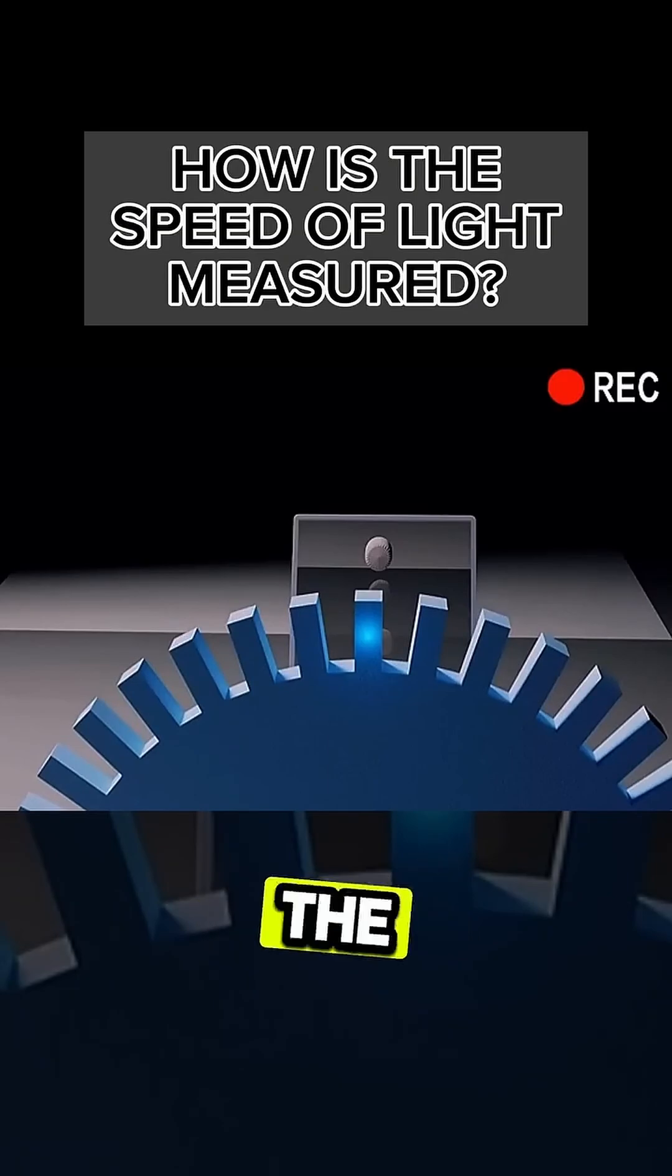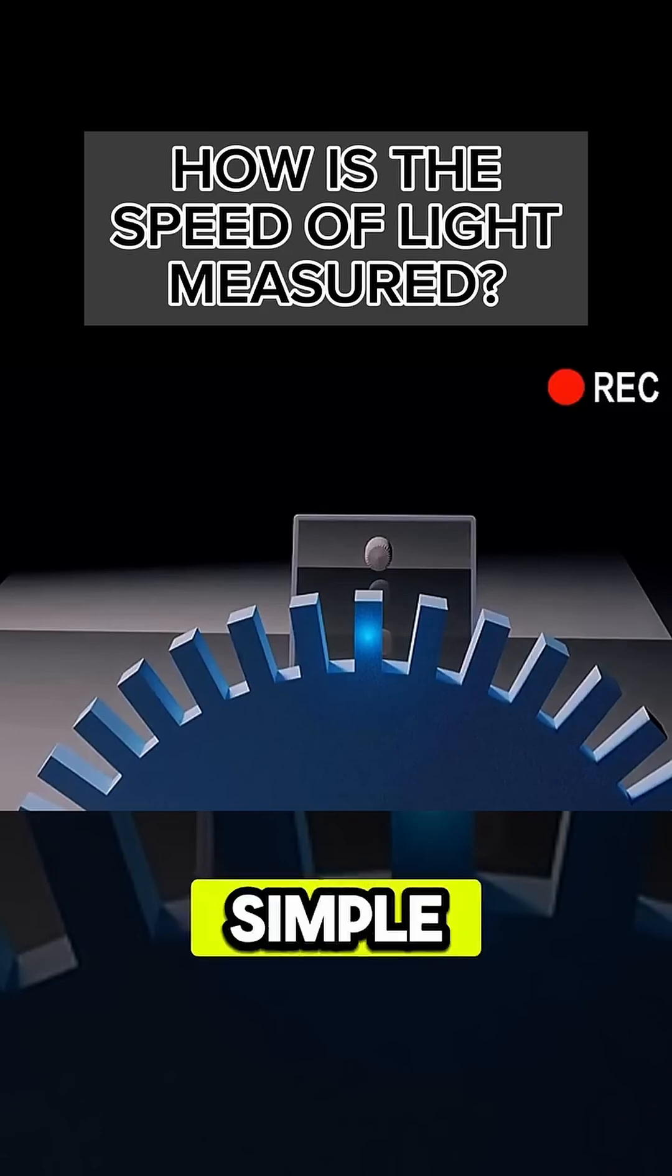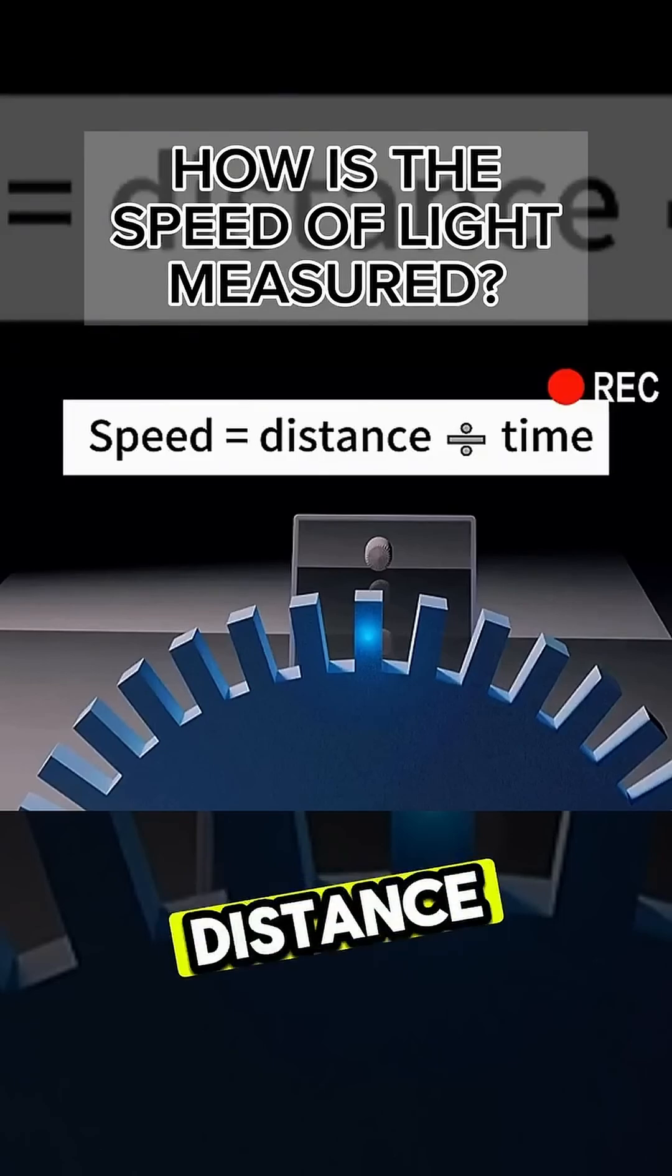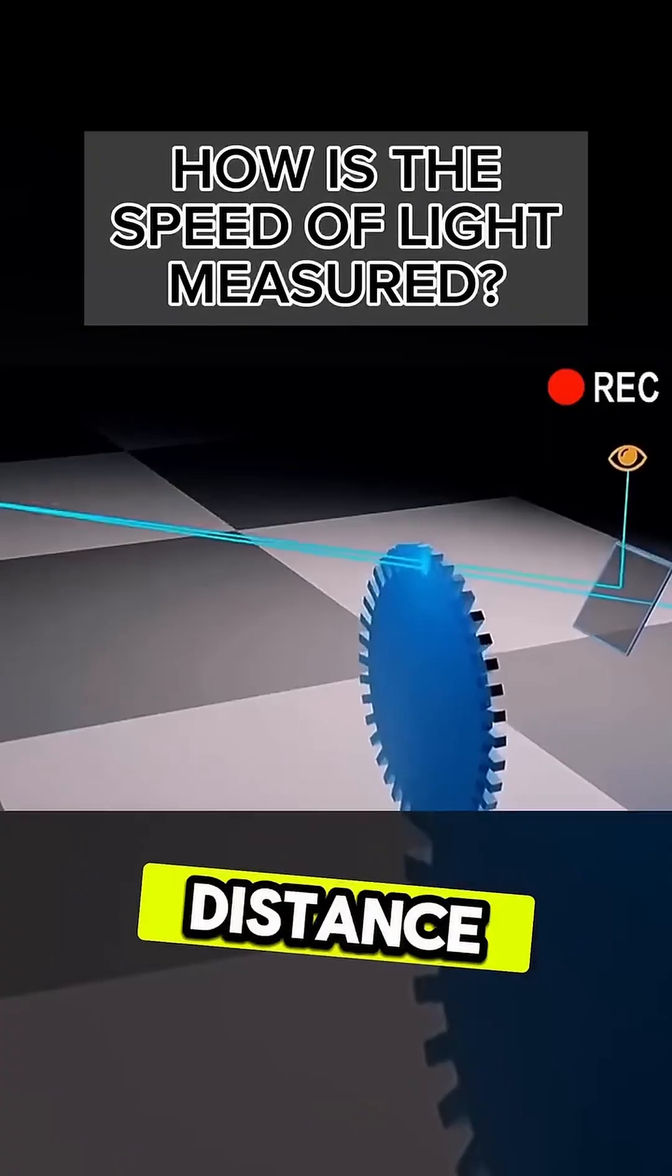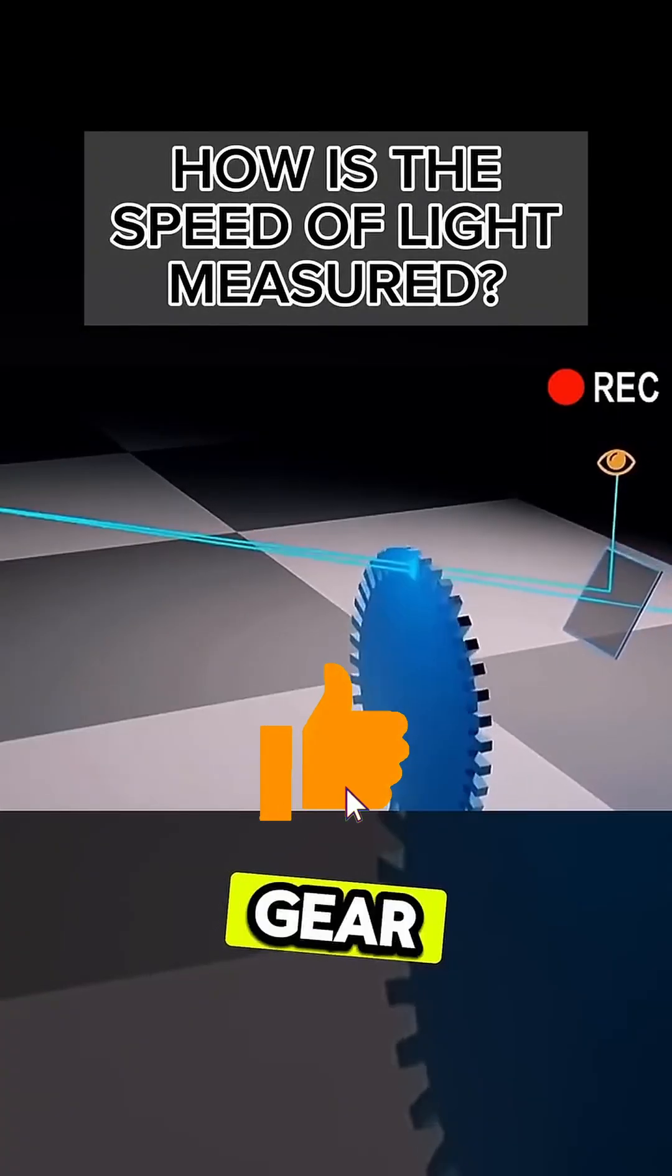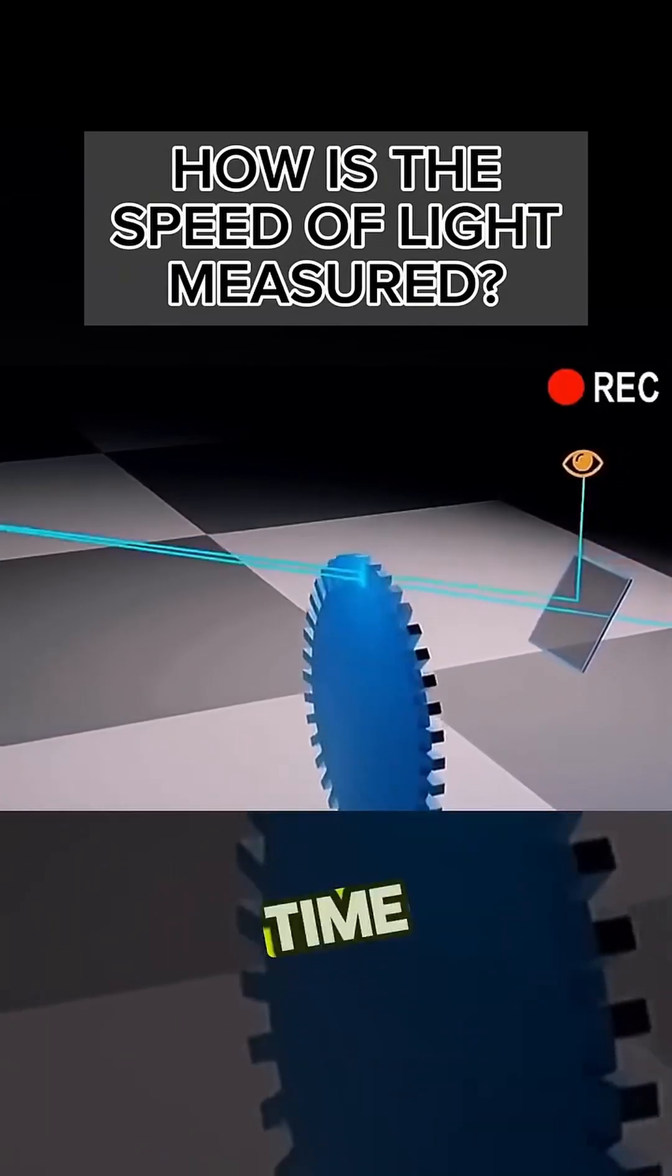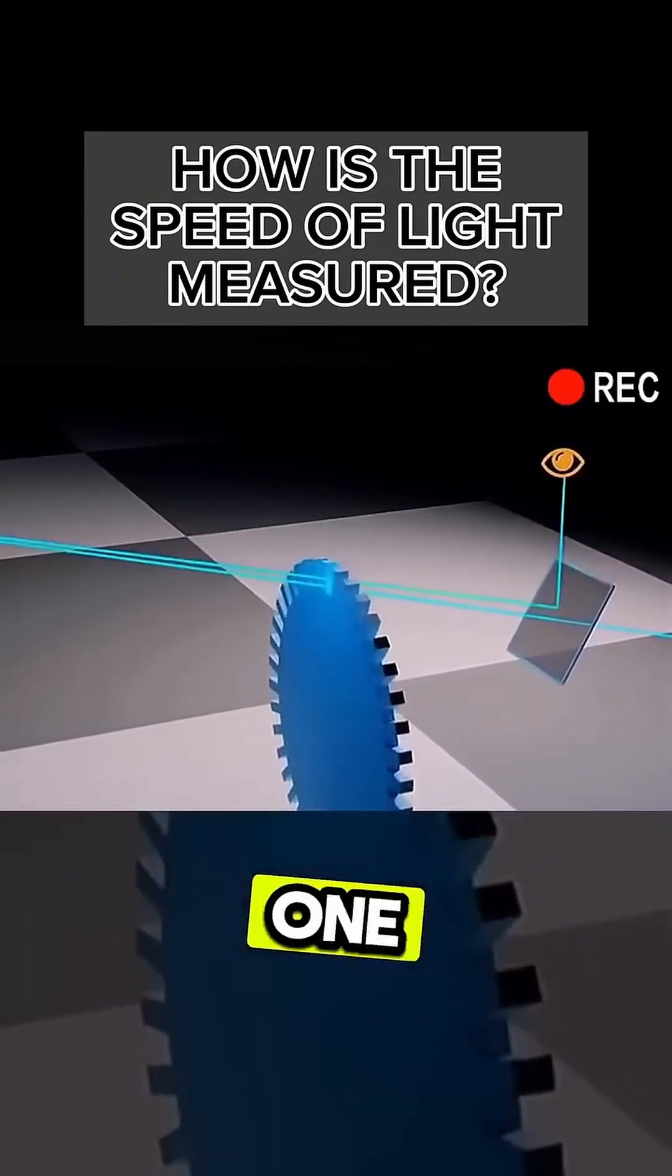Once you know the speed of the gear and the distance between the gear and the mirror, you can use a simple formula to calculate the speed of light. According to the formula, speed equals distance divided by time. Distance is the distance between the gear and the mirror multiplied by two. Time is the amount of time it takes the gear to rotate one space.